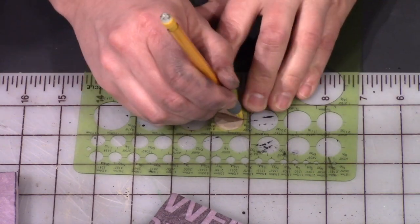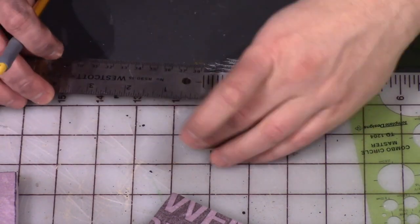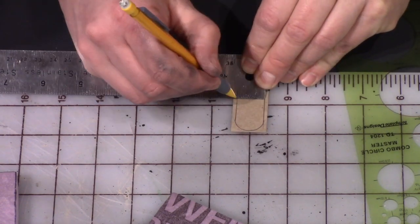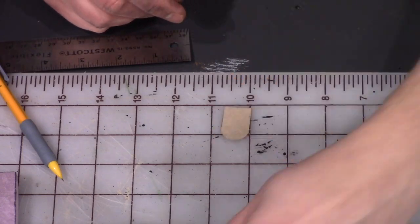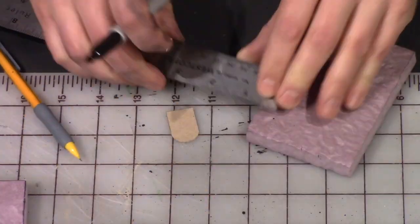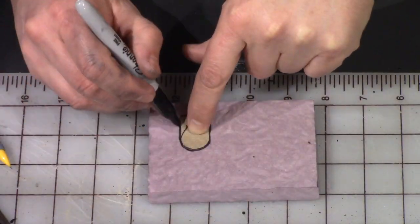Now I'm using some chipboard to trace out a template for the windows that I'll be tracing all around the outside of the building. Just cutting it out with the scissors and then using a marker to measure up a half inch from the ground and trace on the template onto the styrofoam.